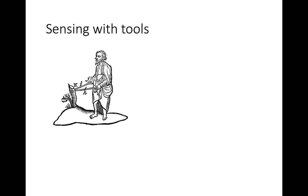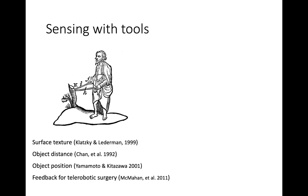There has been a couple of decades of research looking at the actual ability to sense with tools — for example, the ability to sense surface texture and roughness through the end of a tool, the distance of an object being probed, or even the position of an object in external space. This has important applications for feedback during telerobotic surgery.